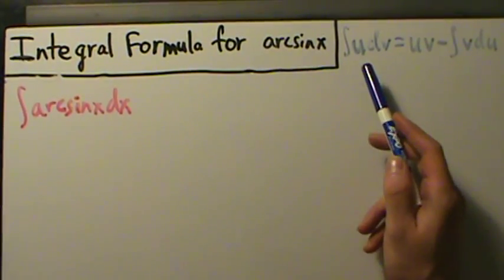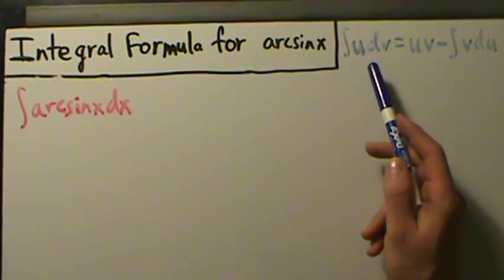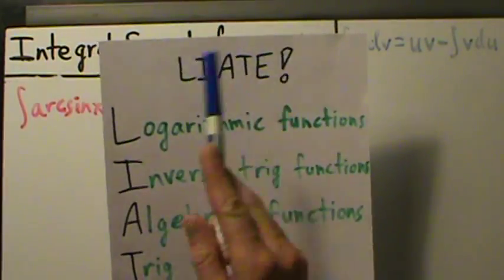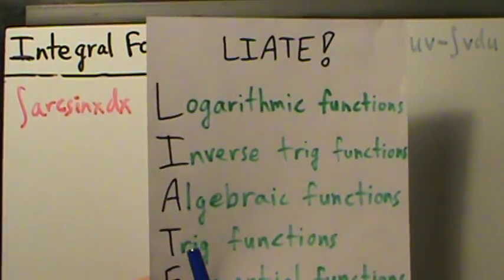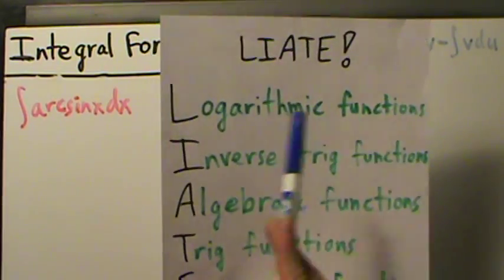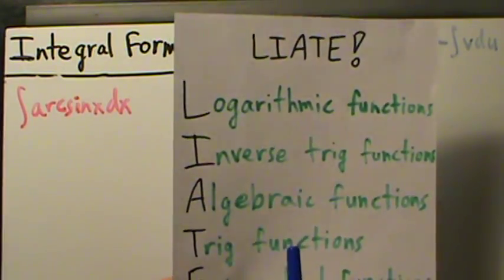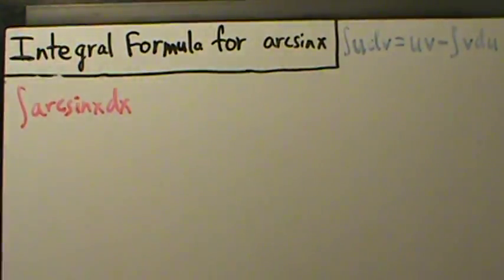We've got to choose u — that's how we do integration by parts. We choose u using the LIATE rule. We really only have one function here, so we're just going to choose u to be the arc sine of x.